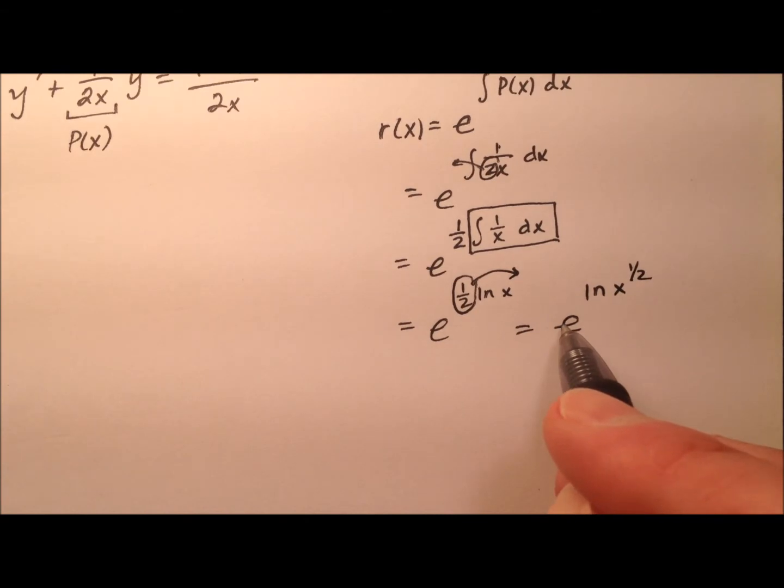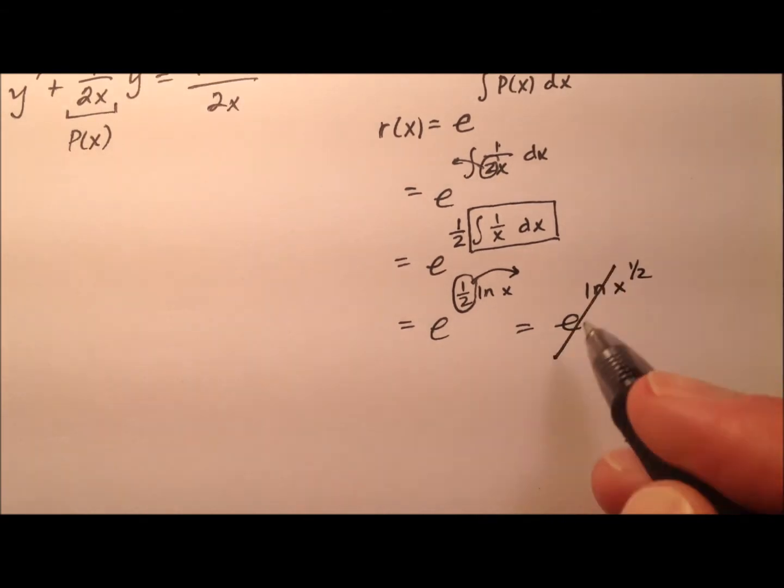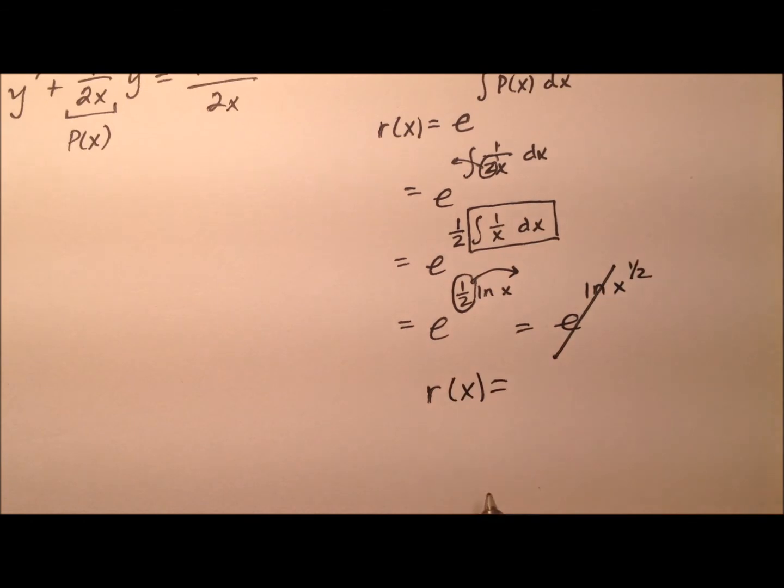And of course, e and the natural log are inverses of one another. So what this whole thing turns into now is my integrating factor is just x to the 1 half or the square root of x.